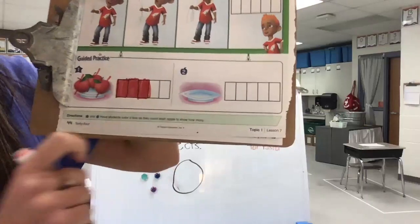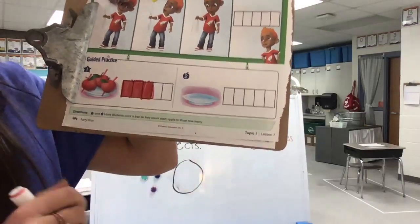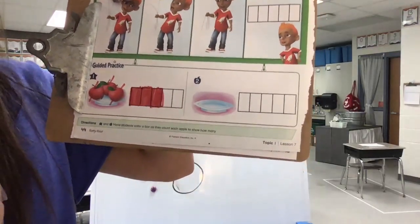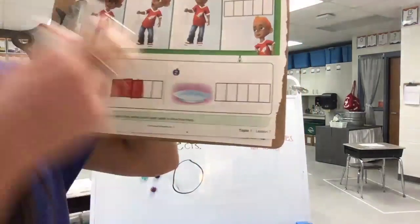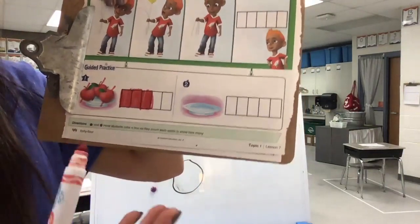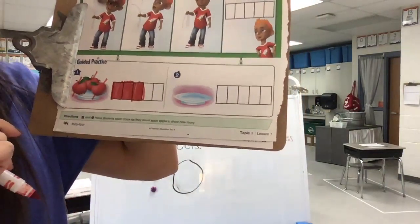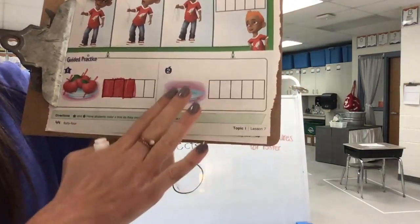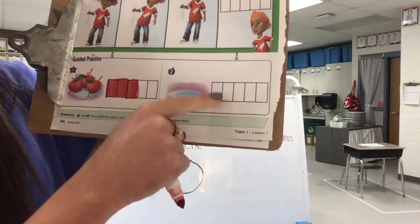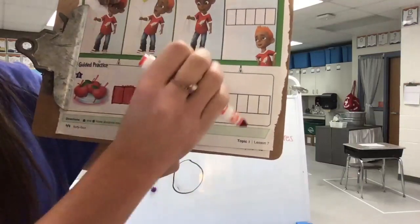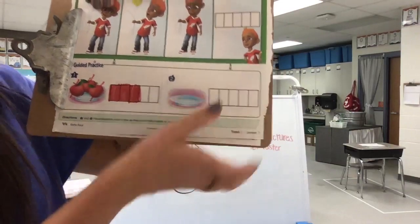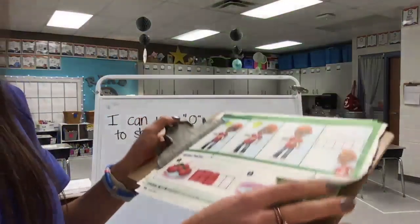If you need more time, go ahead and pause the video to color those boxes. If not, let's move over to number two. Look at the plate right there. Do you see any fruits or vegetables or food on this plate? I don't either. So what number represents none, zilch, nothing at all? The number zero. We don't color any of the boxes because there are zero objects. We don't see any food on our plate, so we don't color any boxes. There are zero. Can you make the zero with your hand? Very good job.